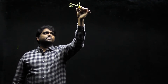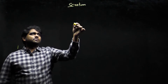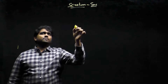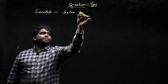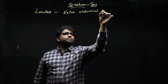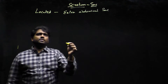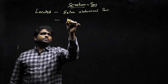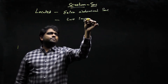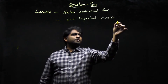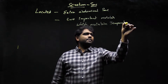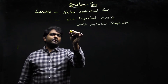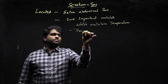Now we start with the next slide about the scrotum. The scrotum or scrotal sac is located in the extra-abdominal region. It is also called the scrotal sac and is made up of two important muscles which maintain temperature, so it acts as a thermoregulator.